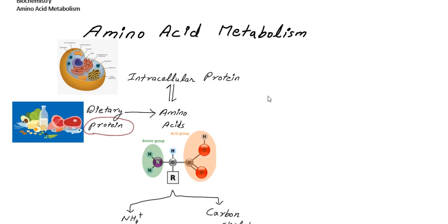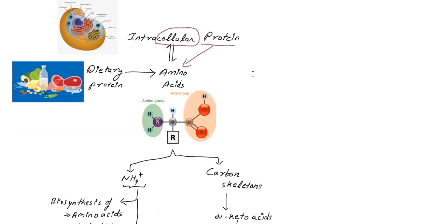We are going to talk about amino acid metabolism. When proteins break down, we get amino acids. Basically, an amino acid consists of an amino group and an acid group attached to a carbon.